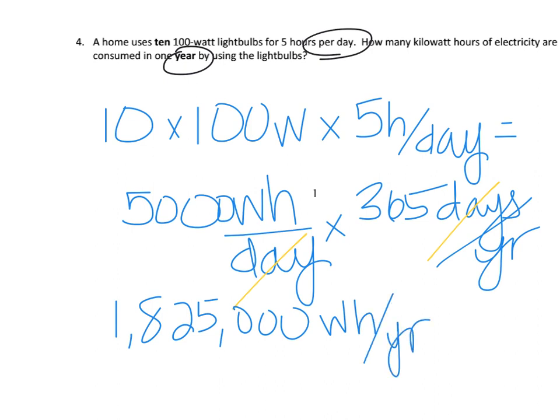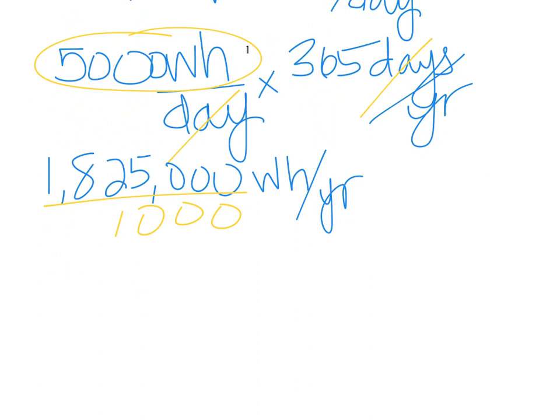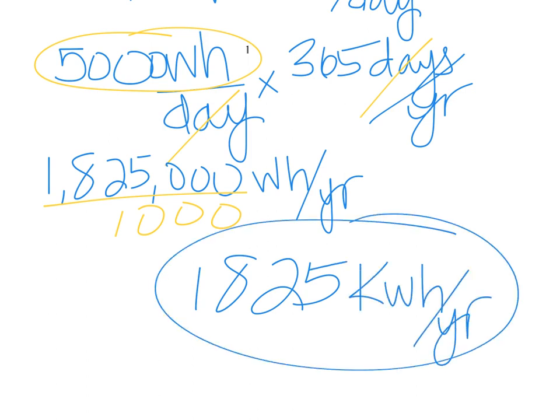But it asks for it in kilowatt hours. So I could have converted at 5000—there's 1000 watts per kilowatt—so I could have divided by 1000 there, or I can divide here at the end by 1000, or I can move the decimal place back three times to convert to kilo from watt. So my answer is 1825 kilowatt hours per year. And that's our correct answer.